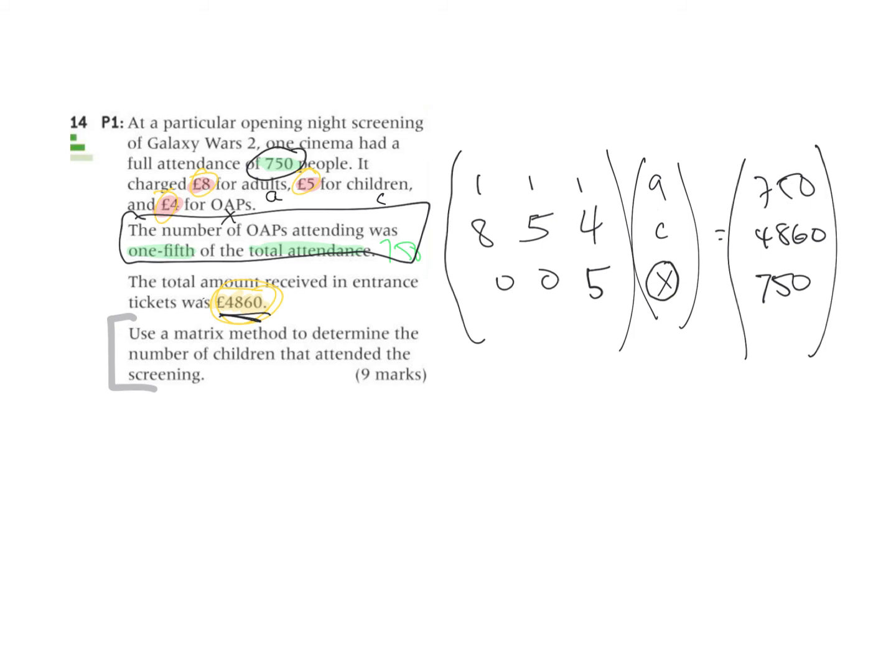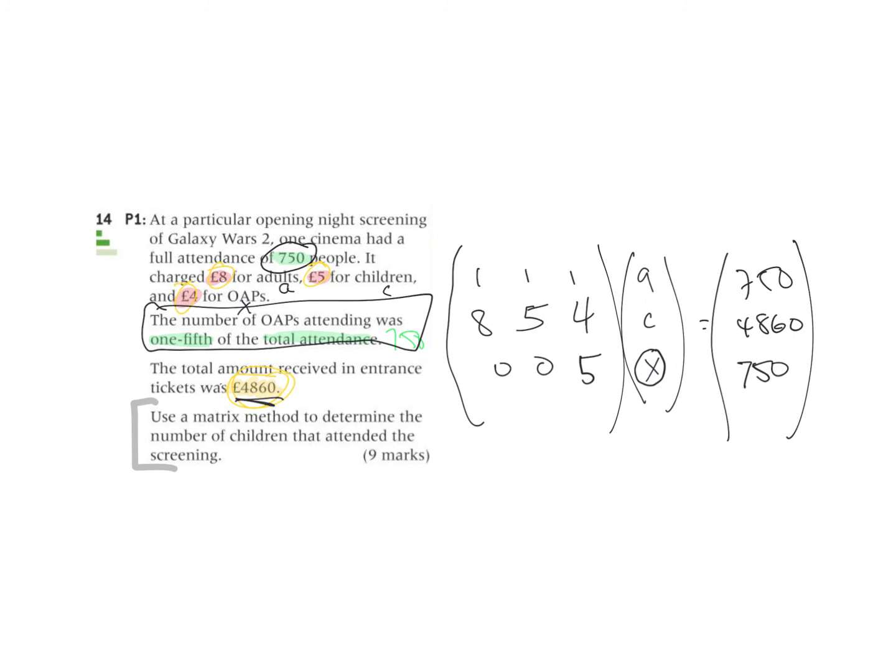So this is how we can do the matrices. You could have also considered A plus C plus X is 750, 8A plus 5C plus 4X is 4860, and then you could say 5X is equal to 750 as well. So if you make the equations that way, then you can convert to matrices and go from there.